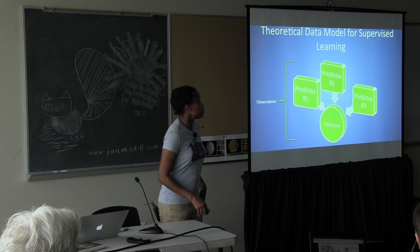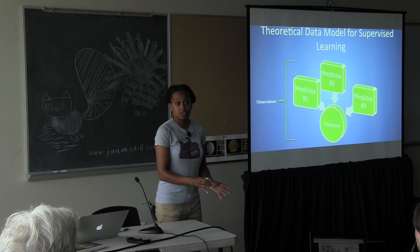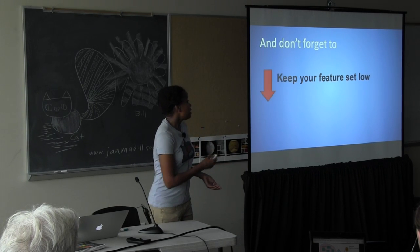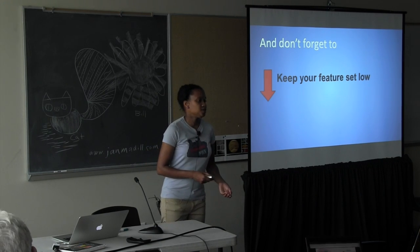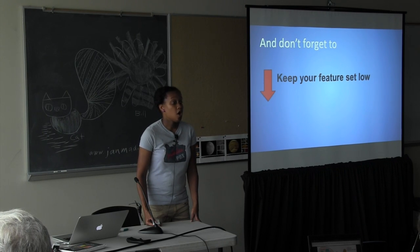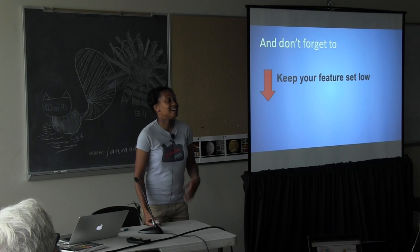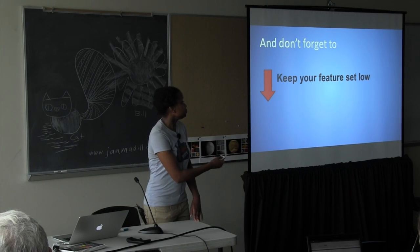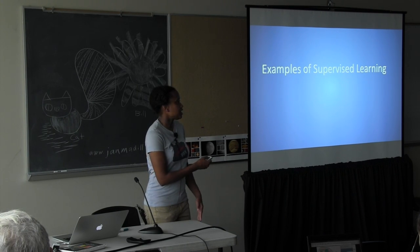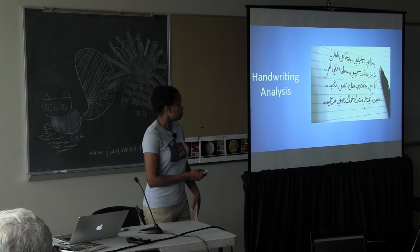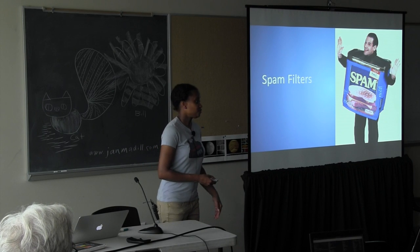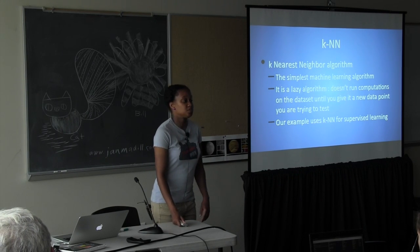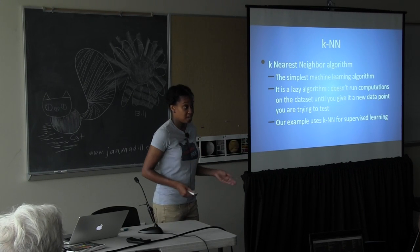Here's a theoretical data model for supervised learning. You have your predictors, you take your predictors and you have your outcome. Remember to keep your sample size high and keep your feature set low. The reason is that you want to avoid overfitting your model and avoid putting unnecessary noise into your model — you want to make sure your model is a representation of signal. Examples of supervised learning besides Evernote include handwriting analysis, spam filters, and finally KNN. KNN is one of the simplest machine learning algorithms there is — probably the first algorithm you'll be introduced to.